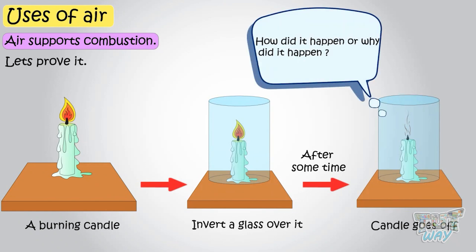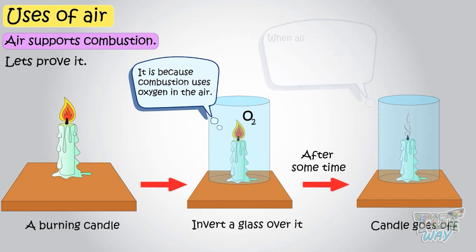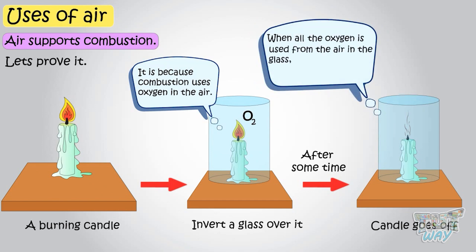How did it happen, or why did it happen so? It is because combustion uses the oxygen in the air, and when all the oxygen is used up from the air in the glass, the combustion stops on its own, as there is no oxygen left in the glass.